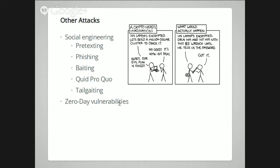Social engineering attacks go into psychology rather than technology, and a lot of the attacks that actually compromise people are not technical. They had all their ports closed, their firewalls configured right, no injection attacks available in their code — and yet they lose their account. Somebody takes over their Twitter handle, somebody takes over their email account. This is how those happen.